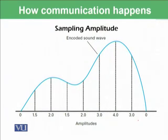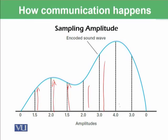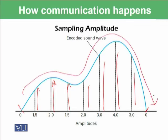This screen shows that the amplitude from its mean position is 1.5 at this interval, then 2, then again 1.5, 2, 3, 4, 3, and then 0. These changes in amplitude form the loudness of the sound.